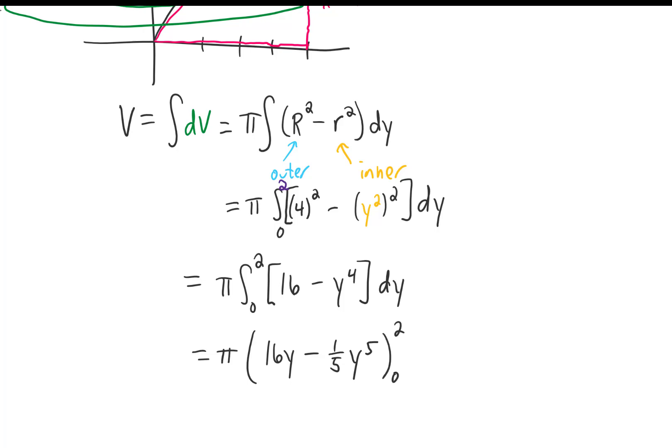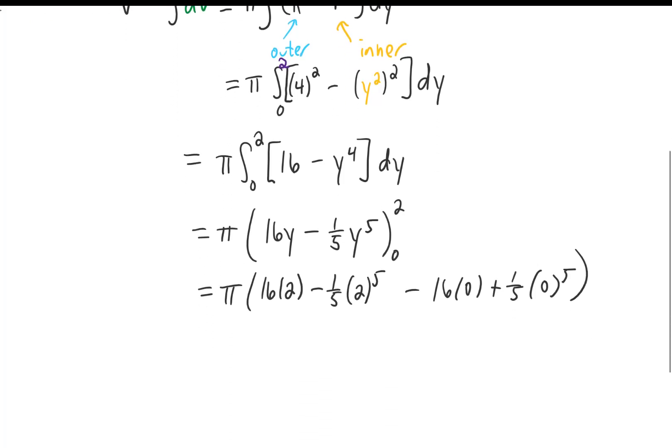And we can plug in our limits, which gives us something that isn't too difficult to simplify. I'm getting 32 minus 32 fifths. 32 is the same as 160 fifths, and when we subtract 32 fifths from that, we get 128 fifths pi.